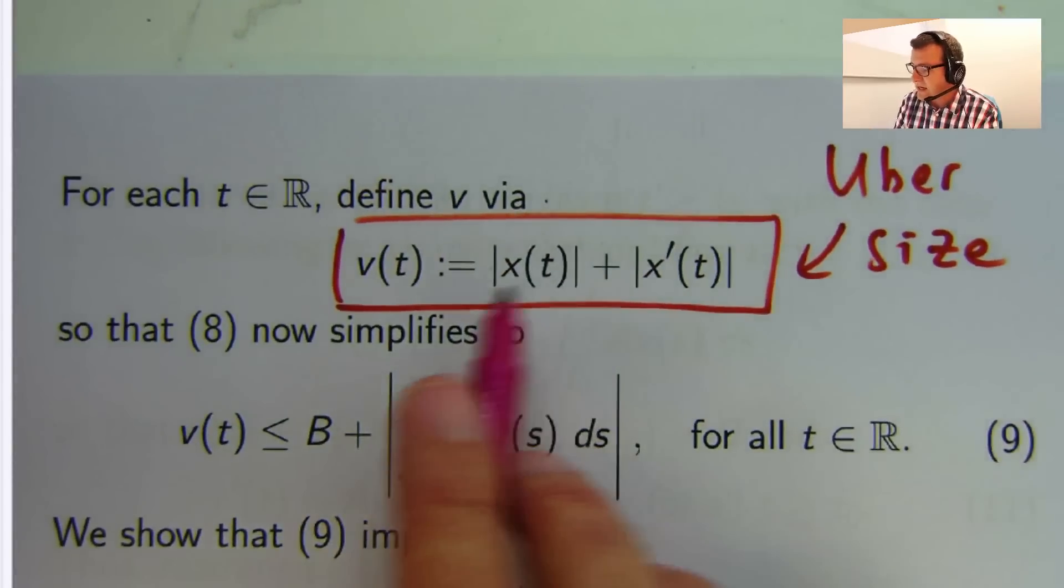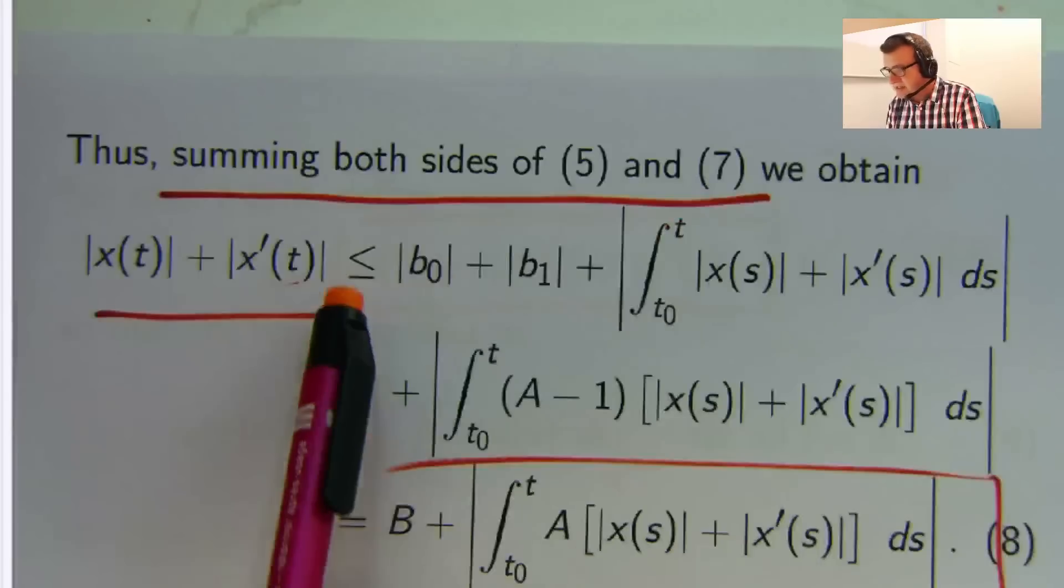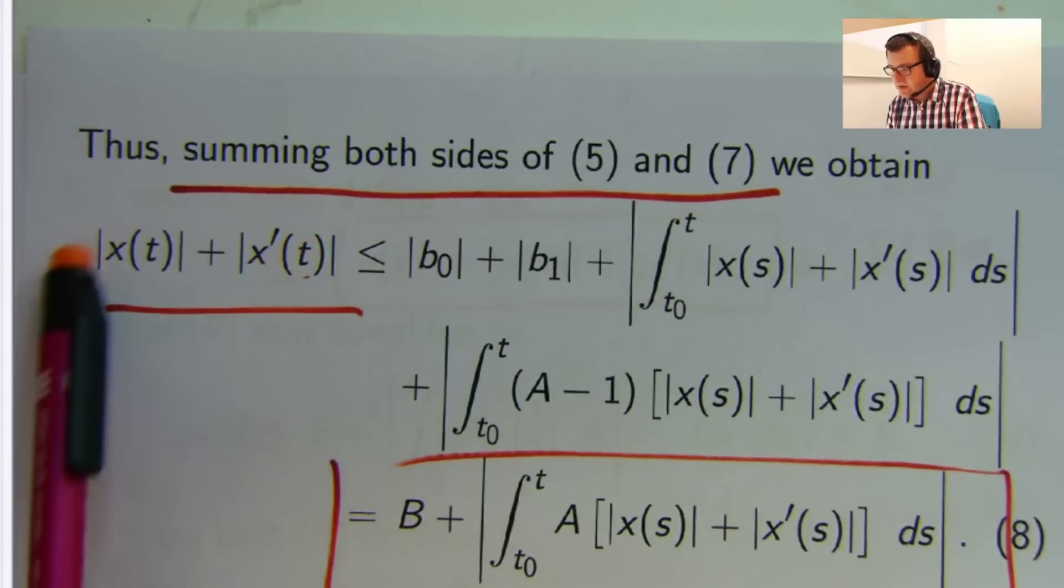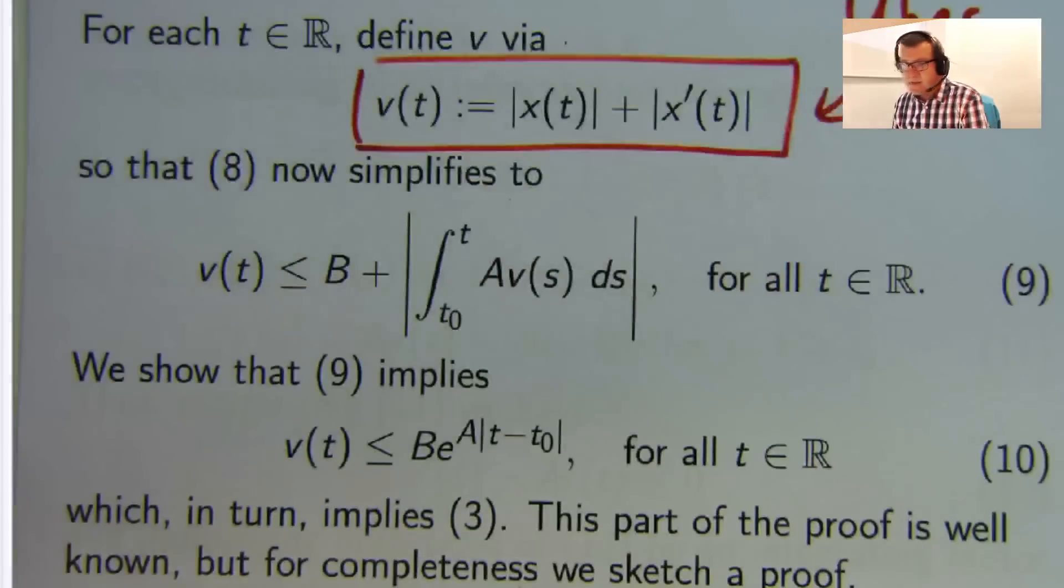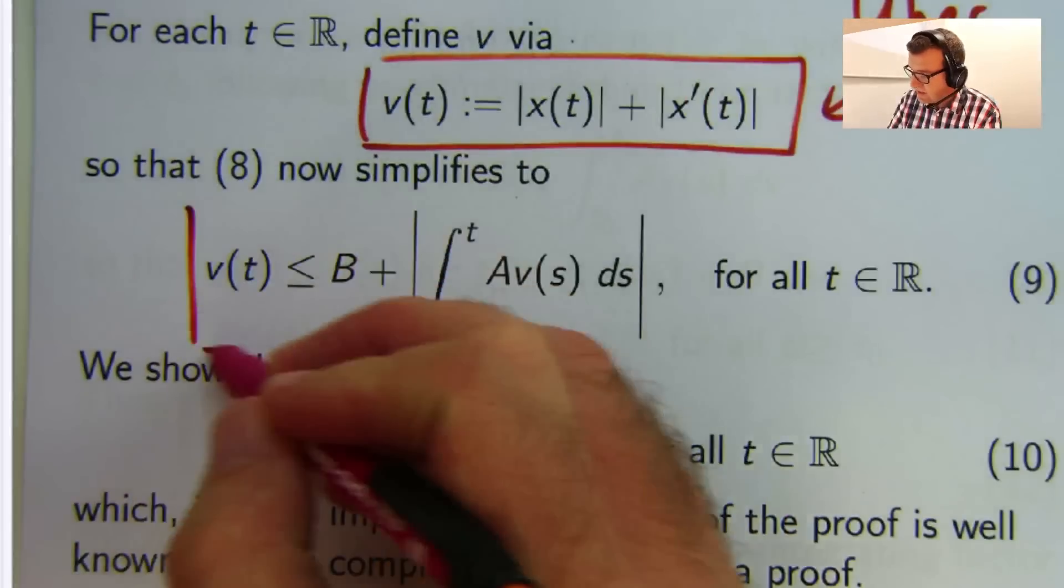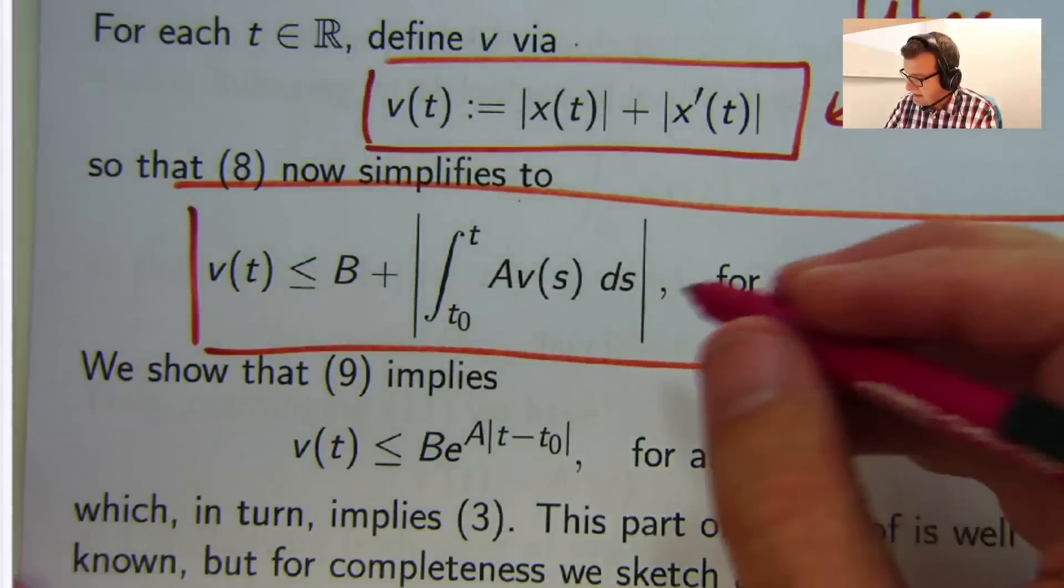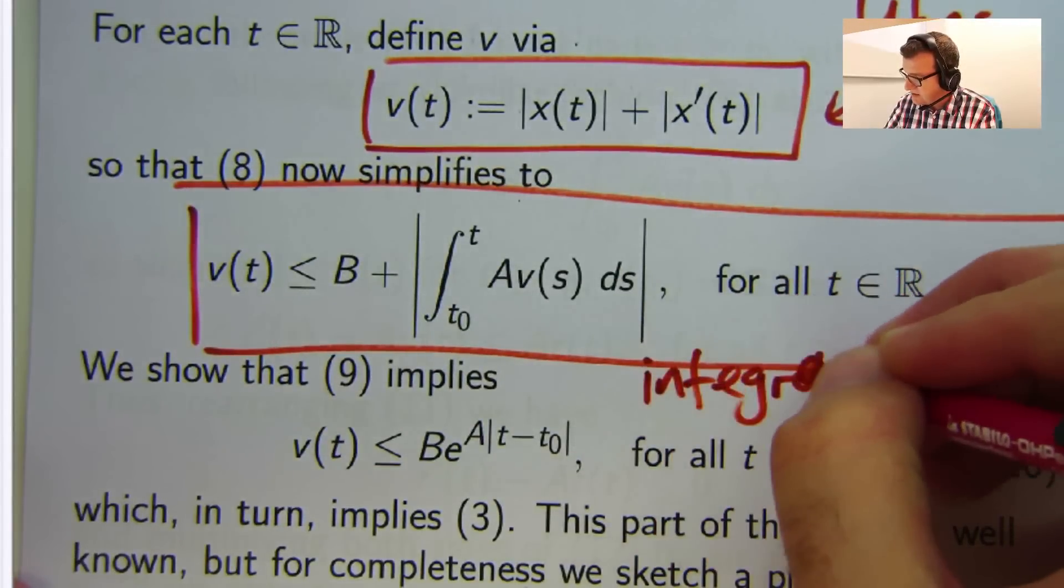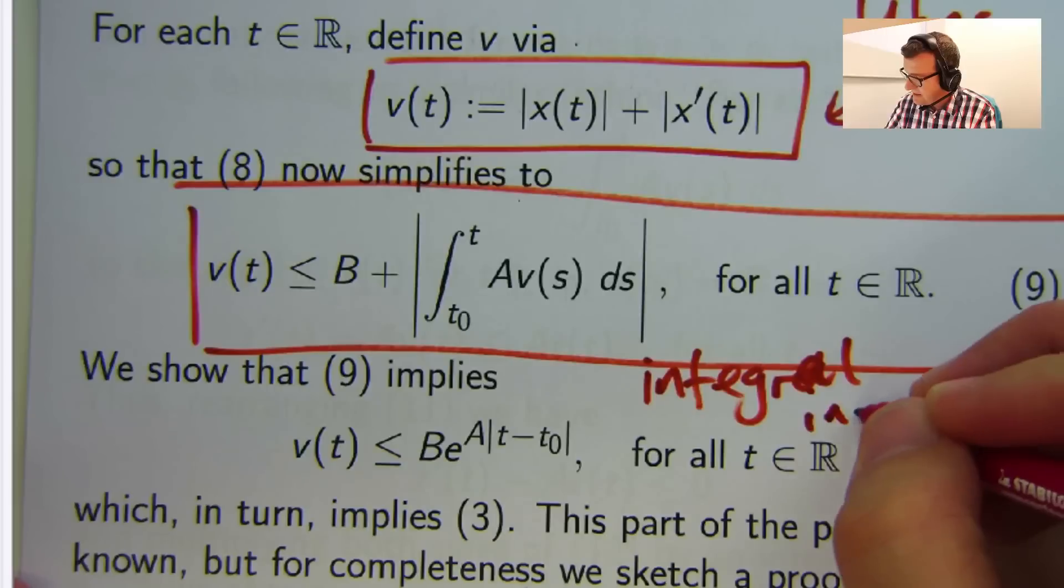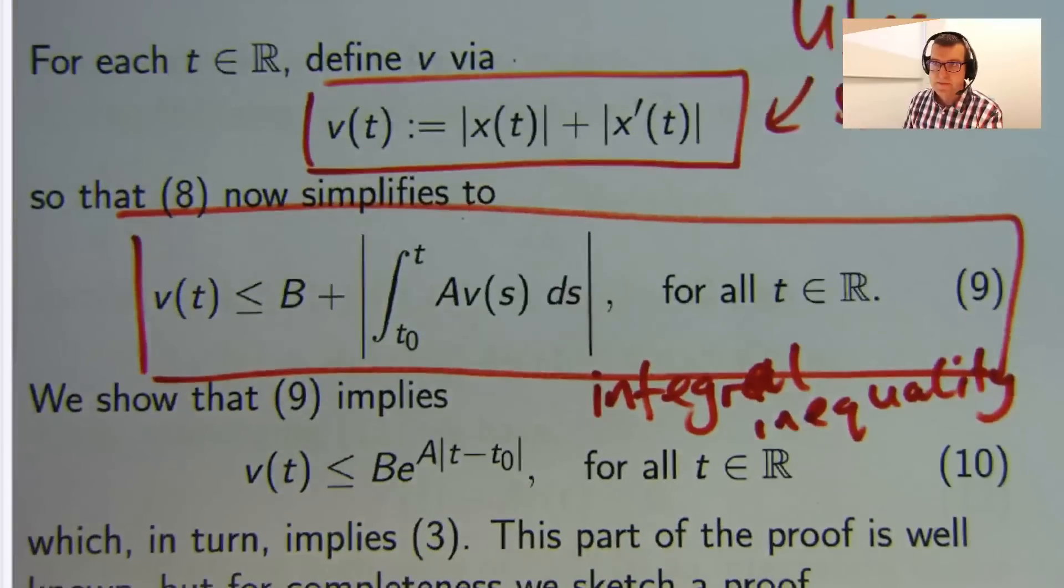Now for each T, you'll get a real number here. So what do we have in (8)? Well, we can now replace this by v and this by v. So we get this expression down here, which is an integral inequality.